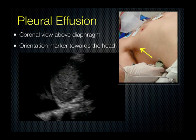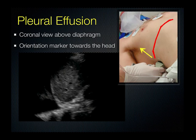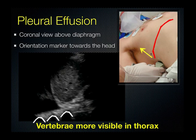Next, we're going to talk about pleural effusions. Here we choose the coronal orientation with the indicator towards the head. We have also chosen the low-frequency probe so we can get a deeper view. Here's the diaphragm — you'd like to place your probe at the interface where the diaphragm separates the thoracic from the abdominal cavity. You can also notice that the vertebrae are more visible in the thorax when there is fluid in the lung, because pleural fluid conducts ultrasound beams while air does not. Structures deep to the fluid are enhanced — we call this posterior acoustic enhancement.